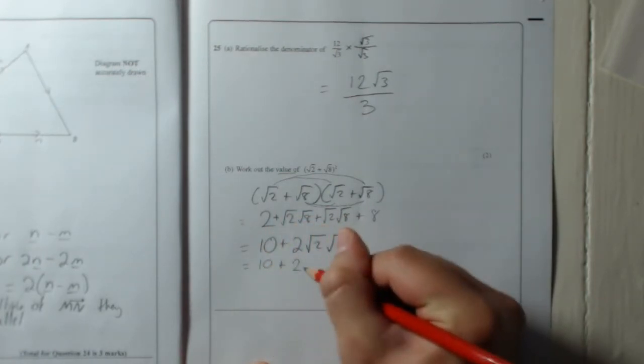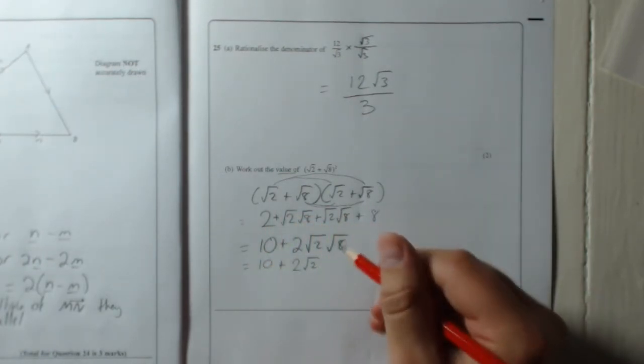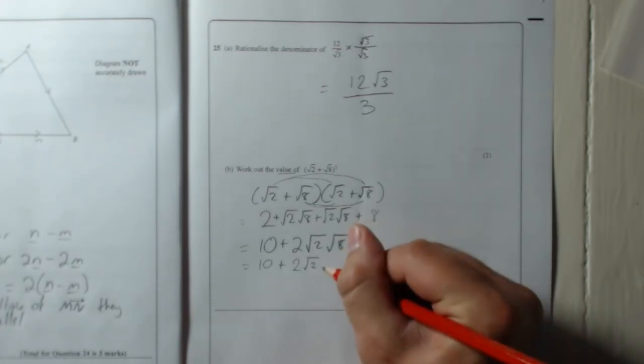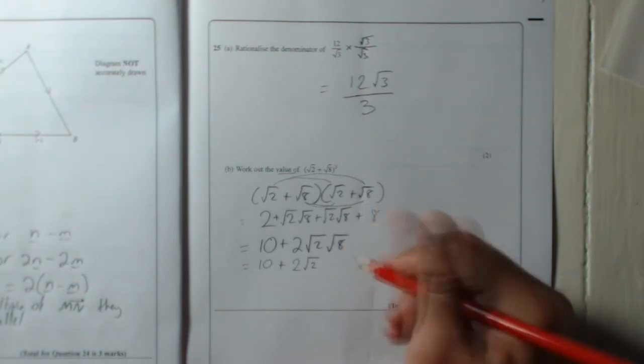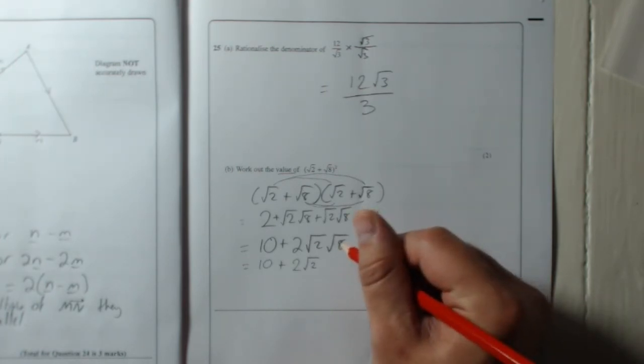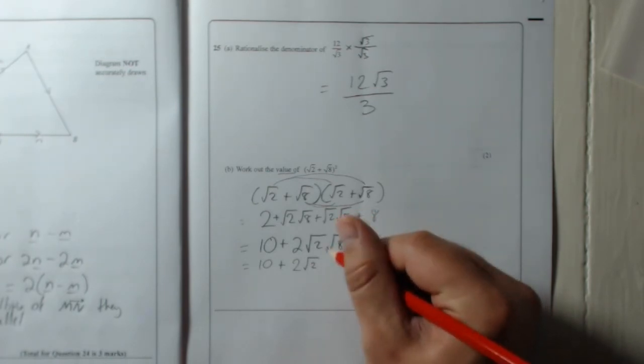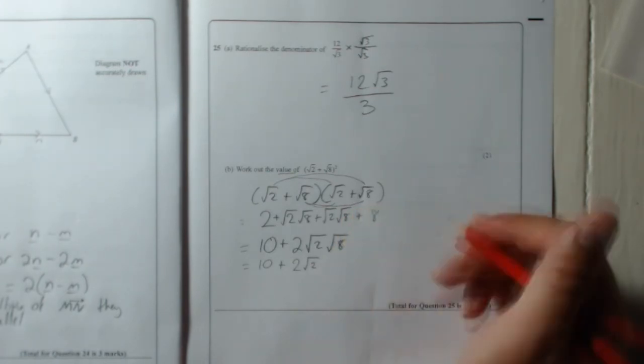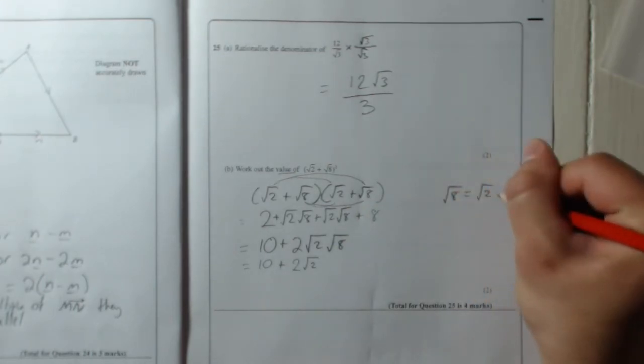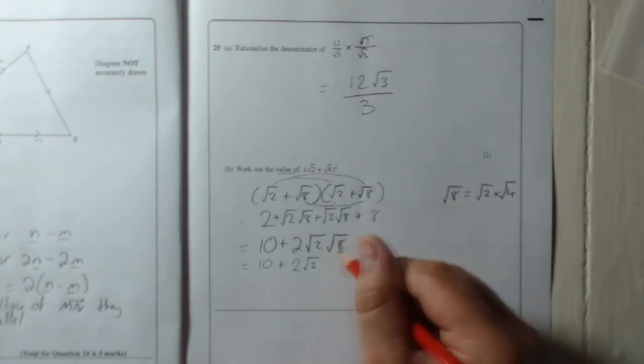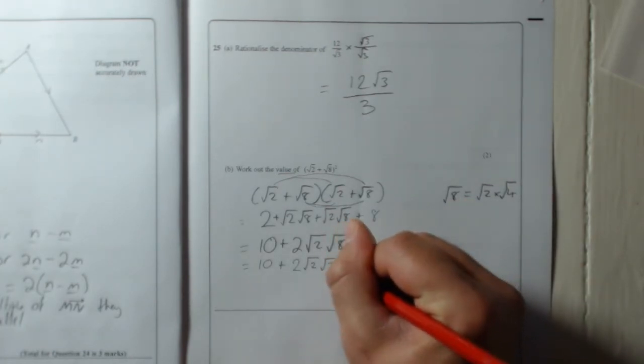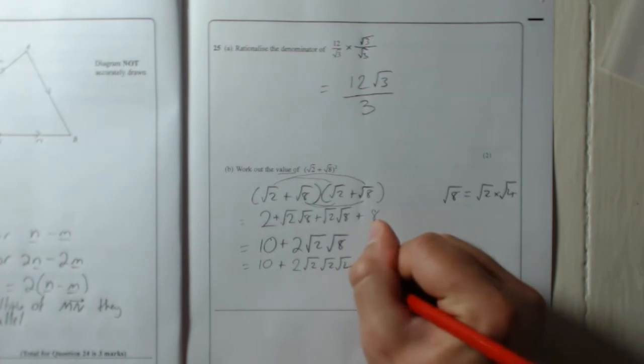So I'm going to write it again: 10 plus 2 root 2, which stays the same. Now root 8 is - remember, any two numbers that multiply to get 8, you can write in roots. So 8 is - well, 8 is 2 times 4. So I'm going to write that instead of root 8, because root 8 is equal to root 2 times root 4. So I'm going to replace that and write root 2 root 4.